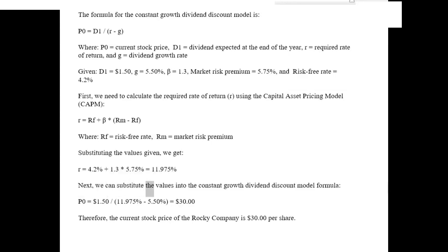Next, we can substitute the values into the constant growth dividend discount model formula. P0 equals $1.50 slash (11.975% minus 5.50%) equals $30. Therefore, the current stock price of the Rocky Company is $30 per share.